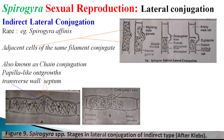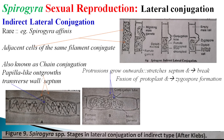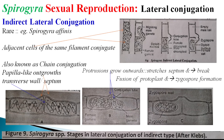As a protrusion starts to grow outward, the septum becomes stretched and eventually breaks. The protoplast of one cell then slowly migrates to the other through the lateral conjugation canal. Fusion between the two protoplasts takes place and a zygospore is produced, as shown in diagram C. Since there is no direct contact between gametes, this is called indirect lateral conjugation.